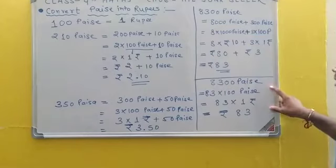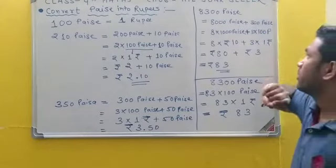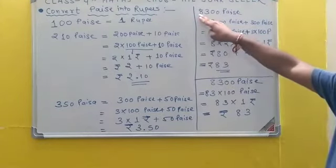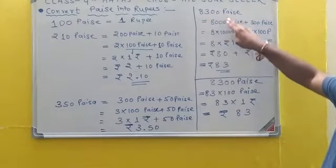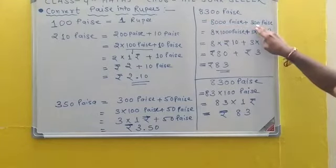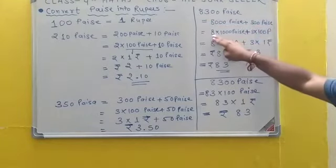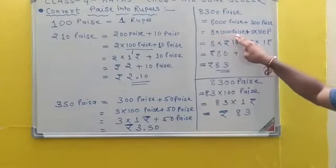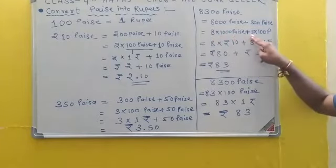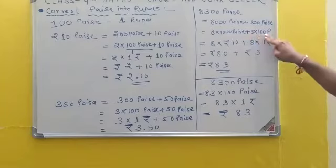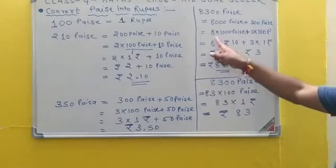Plus 300 Paise. 8 into 1000, 1000 Paise plus 3 into 100 Paise. So 8, 1000 Paise.